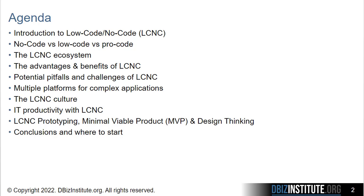This course is composed of 10 modules. We'll begin with an introduction to low-code, no-code, and then we'll examine low-code versus no-code versus pro-code. The low-code and no-code ecosystem is next, and then we'll look at the advantages and benefits. There are also potential pitfalls and challenges for low-code, no-code, and we'll look at how to create multiple platforms for complex applications using LCNC.